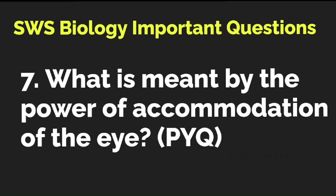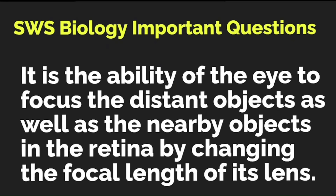What is meant by the power of accommodation of the eye? This is a previous year question paper question. The correct answer: it is the ability of the eye to focus on distant objects as well as nearby objects on the retina by changing the focal length of its lens. This is the way you write a perfect answer.